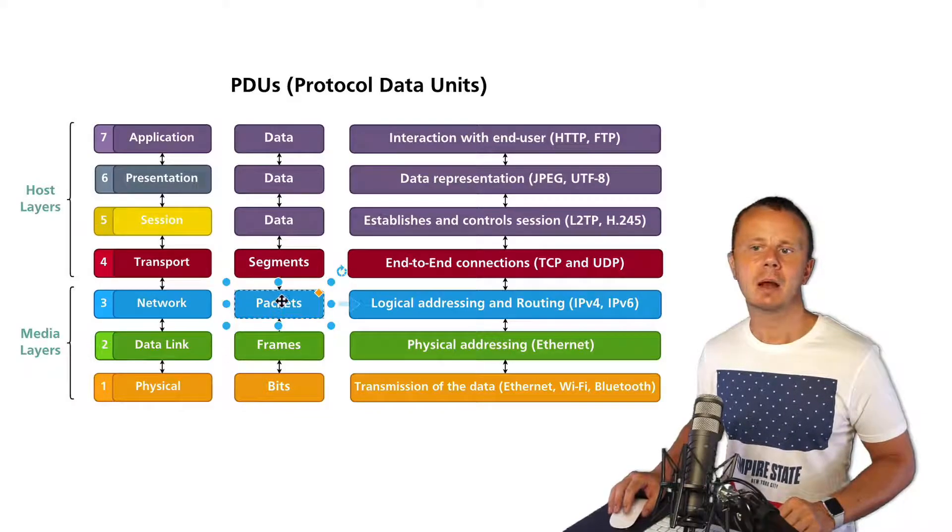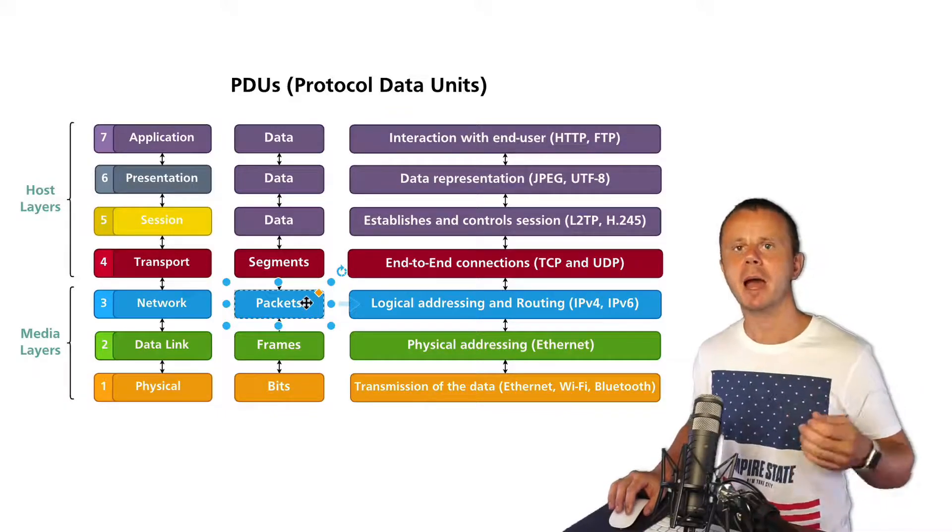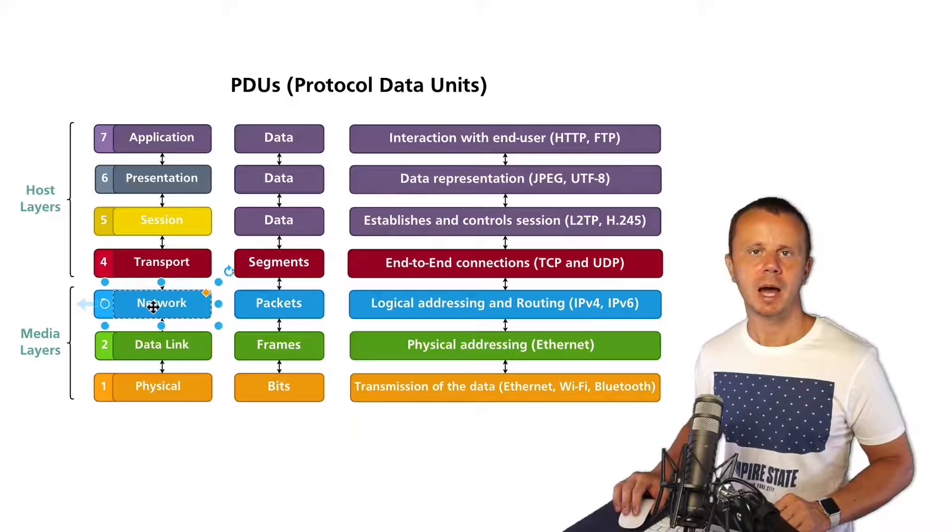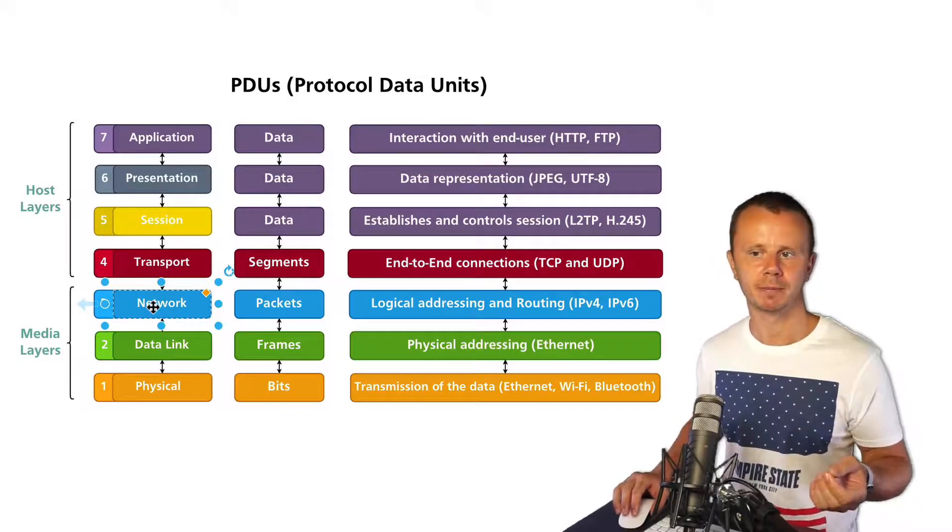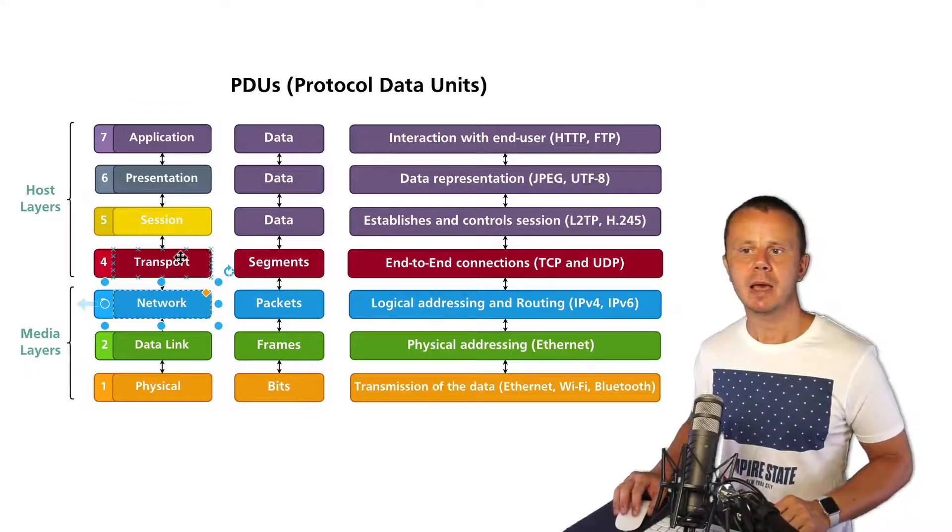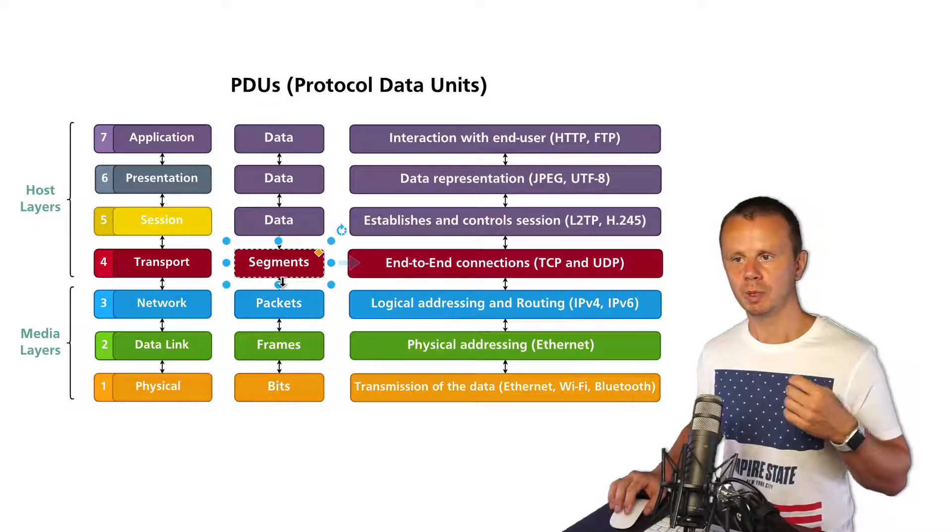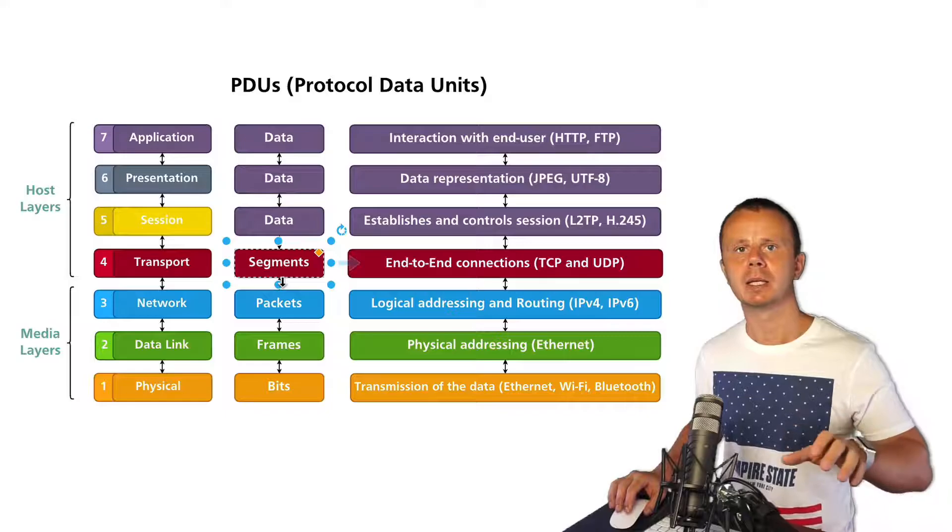On the next layer, the network layer, the PDU is packet. If I say packet, I mean network layer of the OSI model, and I could say IP version 4 packet or IP version 6 packet. The next layer, transport, has a PDU called segment, and there could be TCP segments or UDP segments.